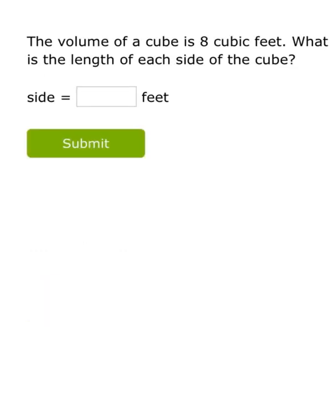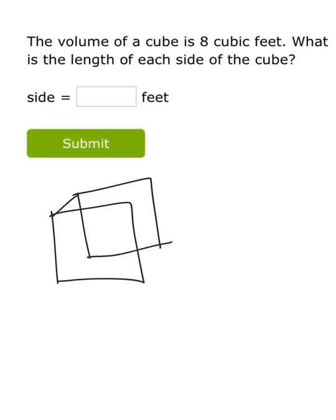Last problem. We know the volume of a cube is 8 cubic feet. Remember that a cube has the same length, width, and height for all of its sides. And we know that if I just take one of the sides and cube it, that would give me the volume, because they're all the same.